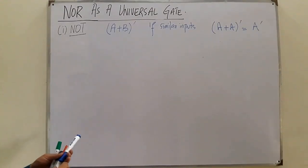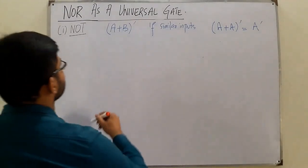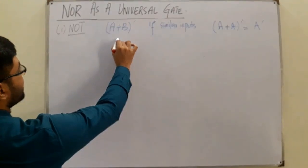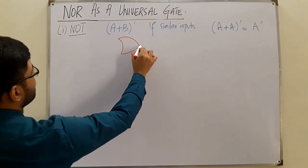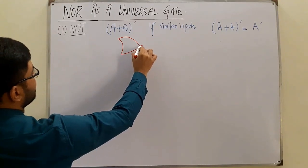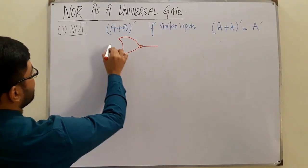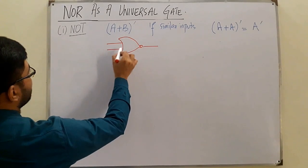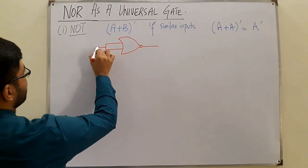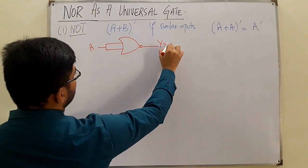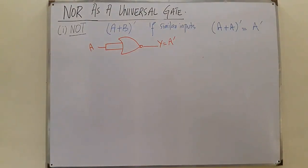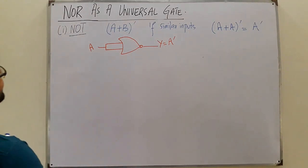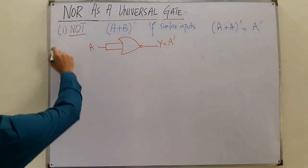So this is the NOR gate with both inputs tied together. The output function is A complement. You need a single NOR gate to represent the NOT gate.